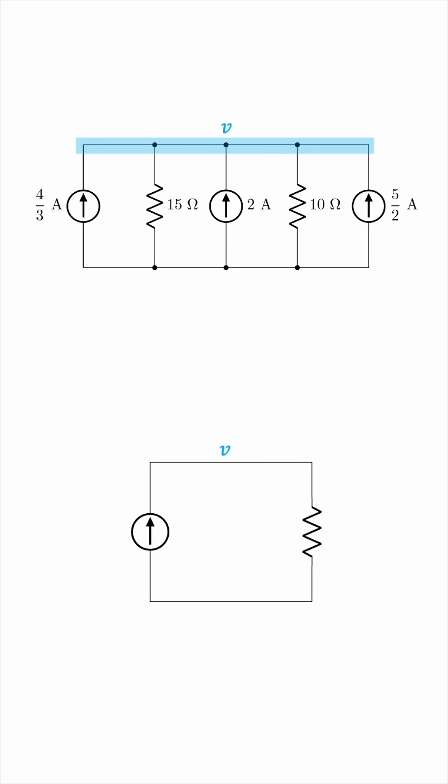The combined current source will just be the sum, because all the sources are pointing in the same direction. This gives us 35 over 6 amperes. And the combined resistor is the parallel combination of 15 and 10, which is 6 ohms.